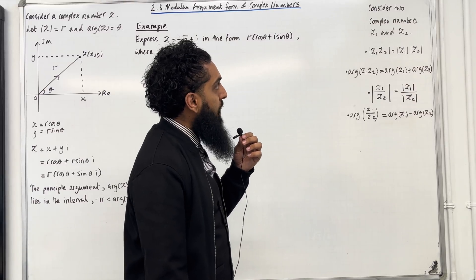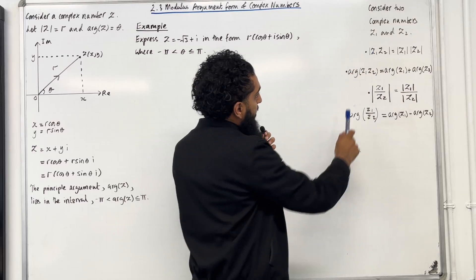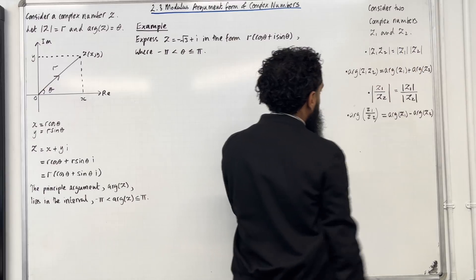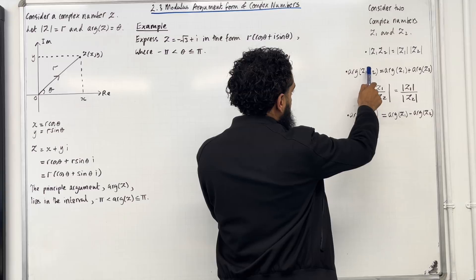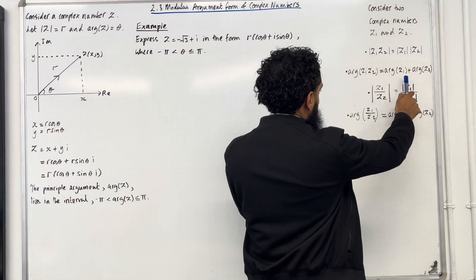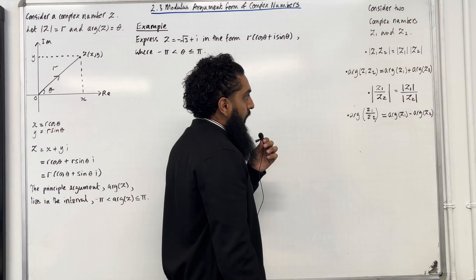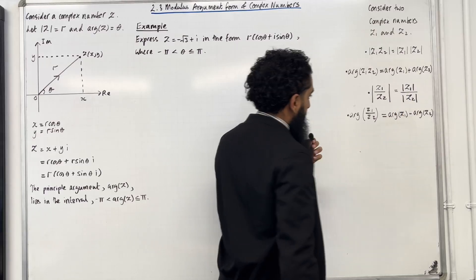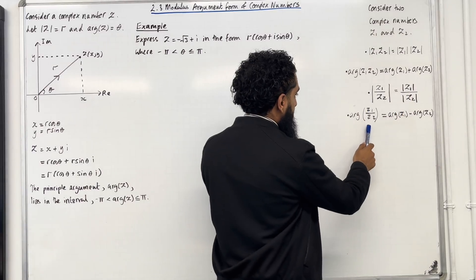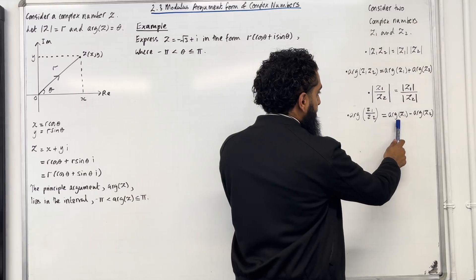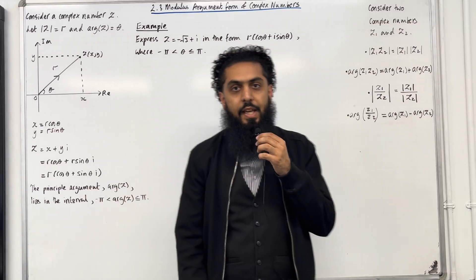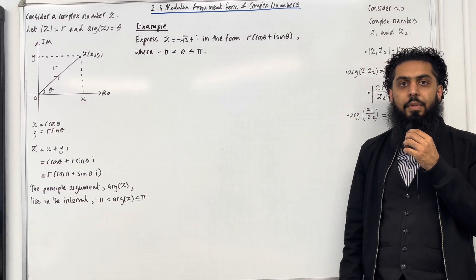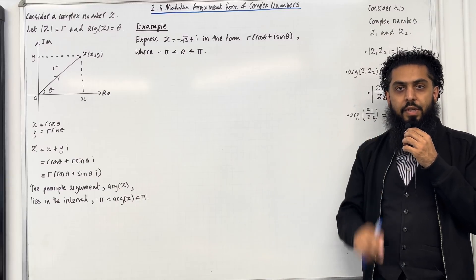Consider two distinct complex numbers z1 and z2. The modulus of z1 · z2 is given by |z1| · |z2|. The argument of z1 · z2 is given by arg(z1) + arg(z2). The modulus of z1/z2 is given by |z1| / |z2|, and the argument of z1/z2 is given by arg(z1) − arg(z2). These are the key facts of 2.3, which I'll implement in one example and two exam-style questions.